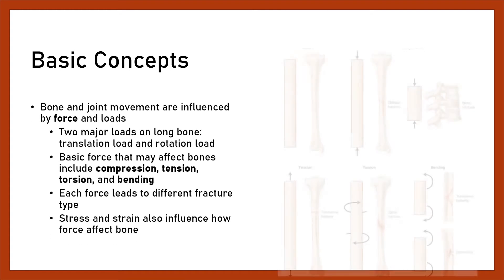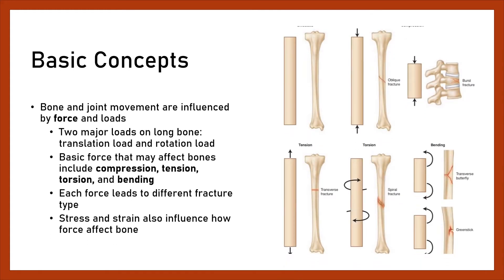Basic Concepts: Bone and joint movement are influenced by force and loads. Two major loads on long bone are translation load and rotation load. Basic forces that may affect bones include compression, tension, torsion, and bending. Each force leads to a different fracture type. Stress and strain also influence how force affects bone.